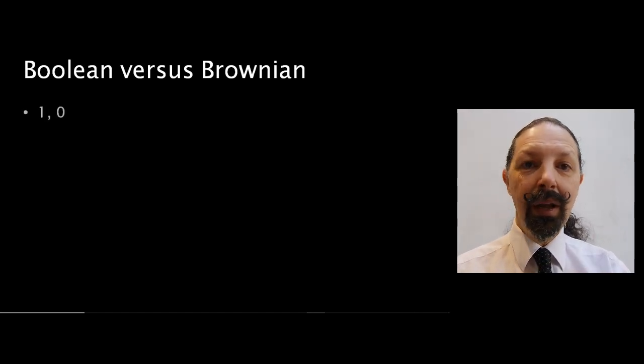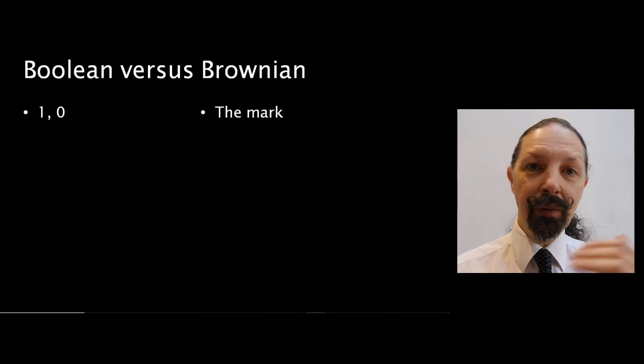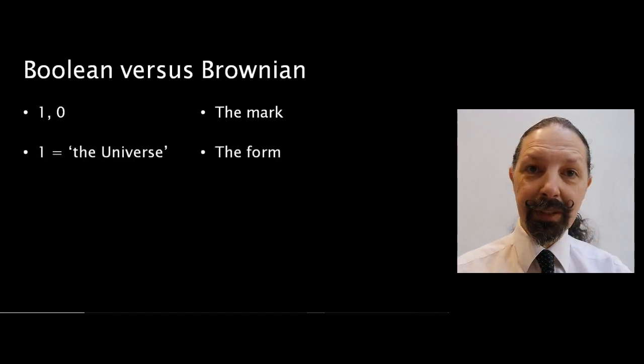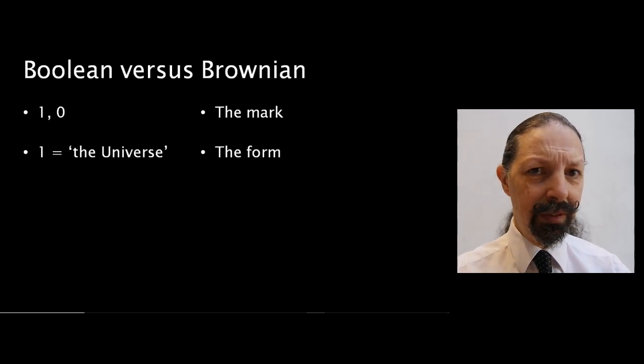You see, in the Boolean system you have ones and zeros. Binary thinking, that's what computers are made up of. In the Brownian system you have the mark. In the Boolean system, one stands for the universe. In which case, what is zero? Where does the universe contain zero?